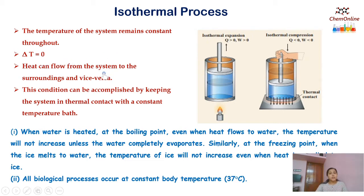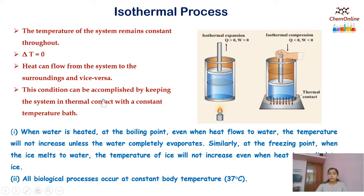In an isothermal process, though the temperature is constant, heat can flow from the system to the surroundings and vice versa. That is, there will be heat exchange between the system and the surroundings, though the temperature is constant. An isothermal condition can be accomplished by keeping the system in thermal contact with a constant temperature bath.